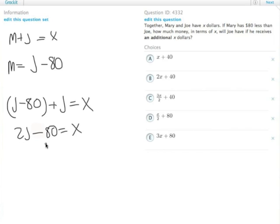Add 80 to both sides and then divide by 2. We get J equals X plus 80 over 2, which is equal to X over 2 plus 80 over 2. So J equals X over 2 plus 40.